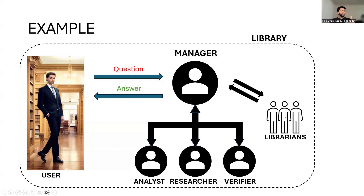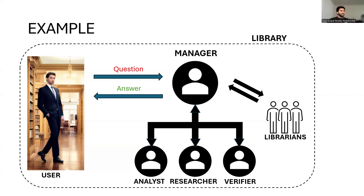We also have librarians who locate relevant books, articles, or documents — they can even search for research papers online and retrieve information. These librarians represent the retrieval capabilities like vector database and knowledge stores. The researcher will read and synthesize the information to extract meaningful insights — the researcher represents the generative models processing the retrieved knowledge. We also have an analyst who can break down the information, identify patterns, draw graphs, and write reports. This analyst represents contextual refinement or task specifications.